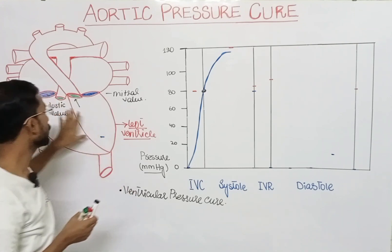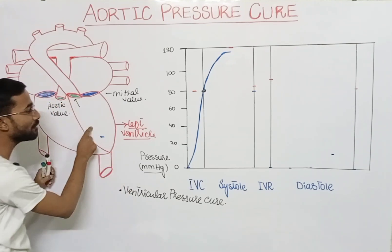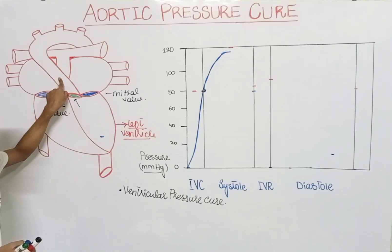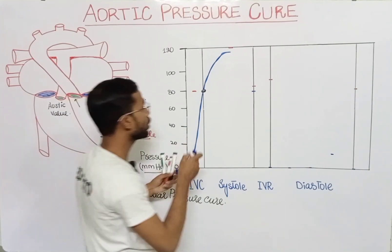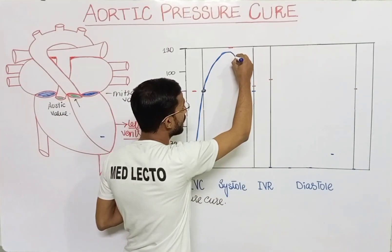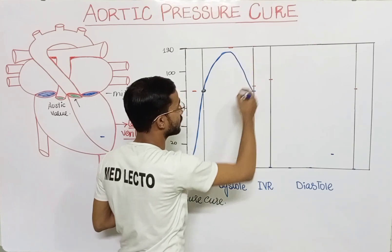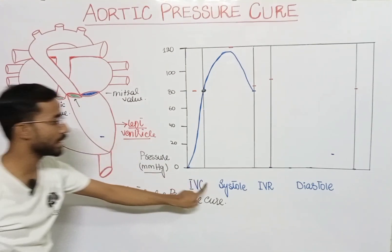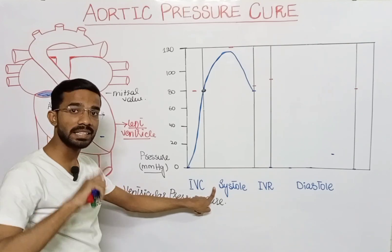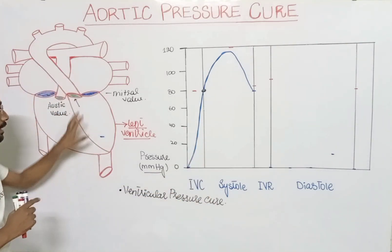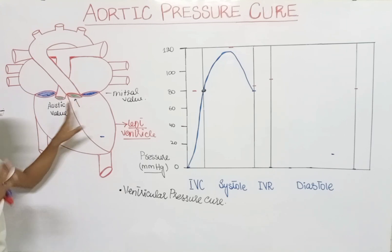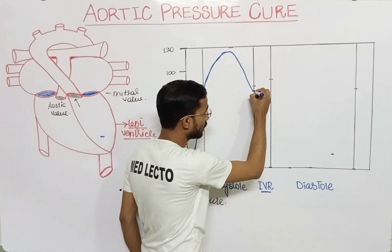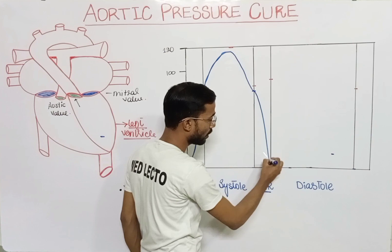After the aortic valve opens, the pressure in the ventricle starts decreasing because the blood has gone into the aorta. So the pressure in the left ventricle starts decreasing. Before diastole, there is another state — isovolemic relaxation — in which the volume remains the same but the pressure decreases.